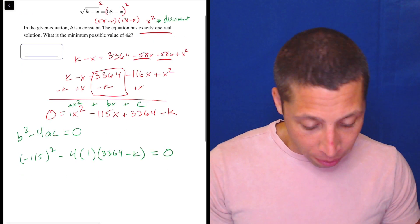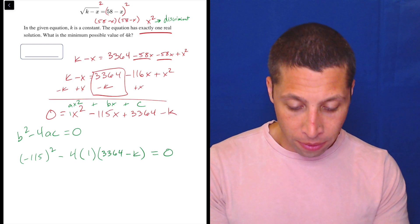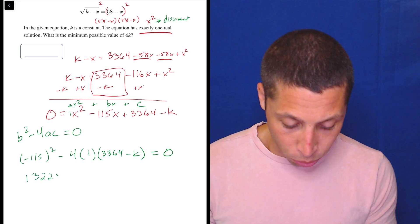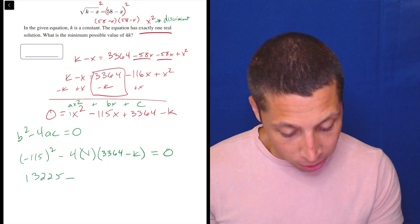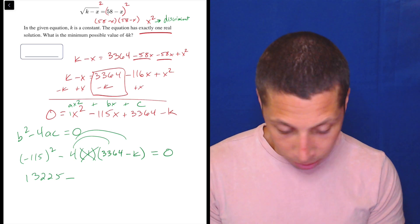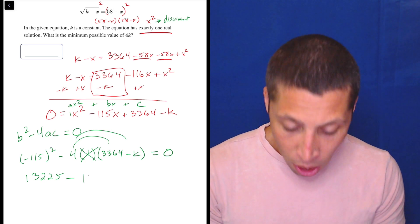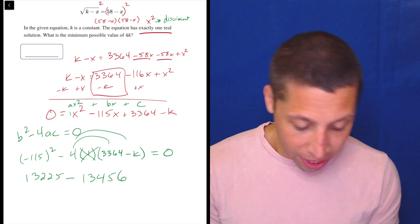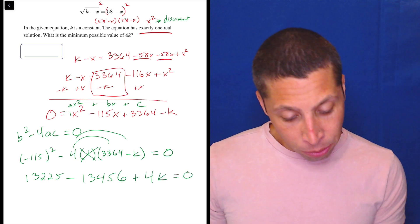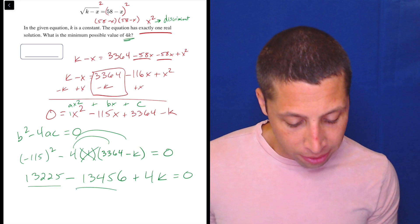So let's take a look again. We can start to solve things here. So we have 115. So 115 squared is, oh boy, 13,225 minus. Now we're going to get rid of the 1 because it doesn't matter, but let's distribute. So that's minus 3364 times 4 is 13,456 plus 4k, which now starts to make sense why they wanted 4k, right? That's not a coincidence.